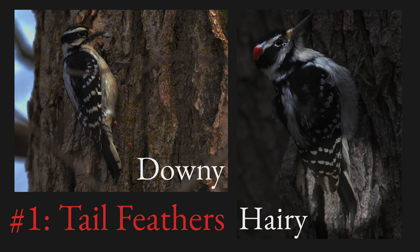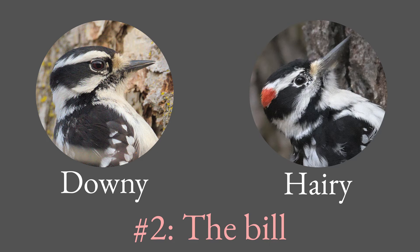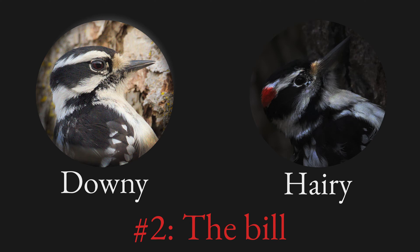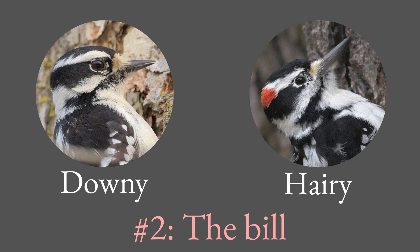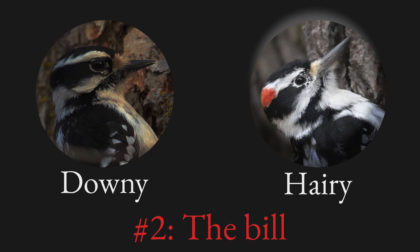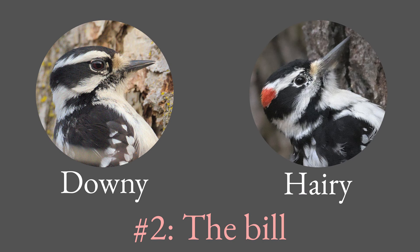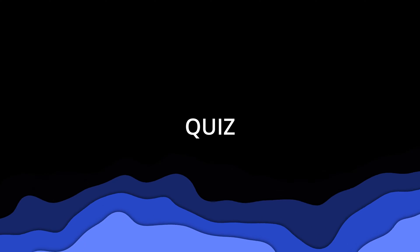But what if you can't see the tail clearly? The other characteristic is the bill. The length of the downy woodpecker's bill is a lot smaller than its head, whereas the length of the hairy woodpecker's bill is close to the length of the head. Although this characteristic is a little bit tricky to use at first, with some experience in looking at both woodpeckers, you'll see that this difference is quite obvious.